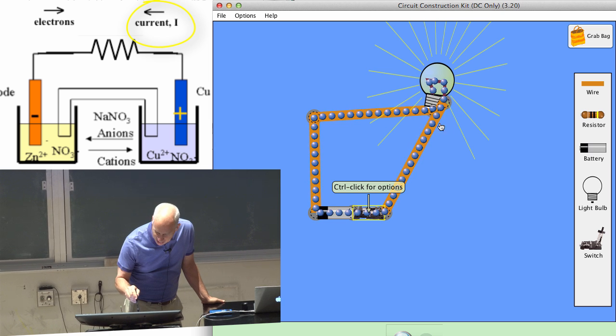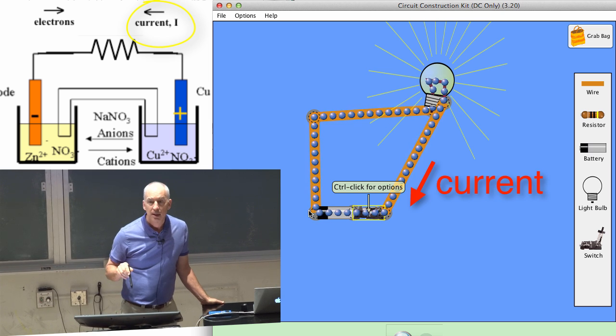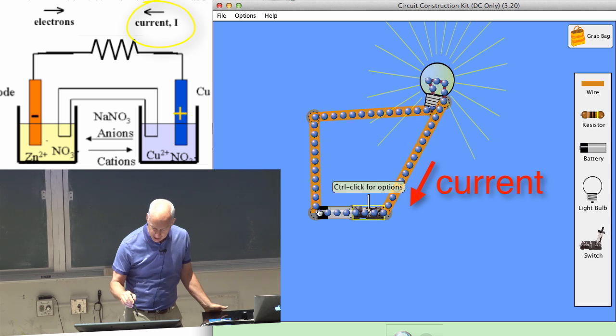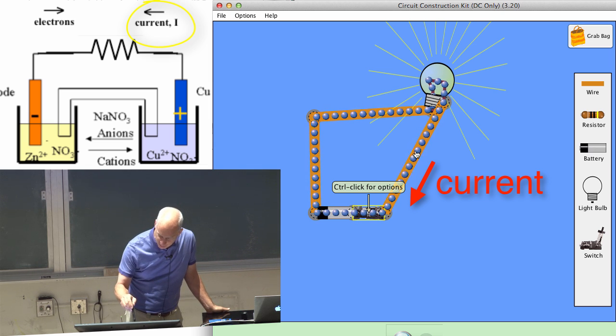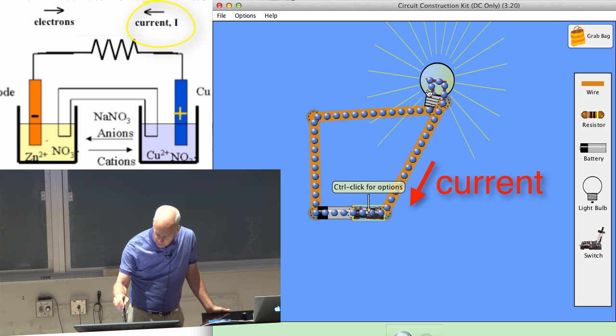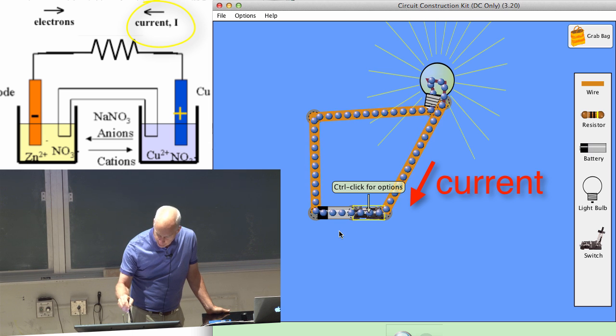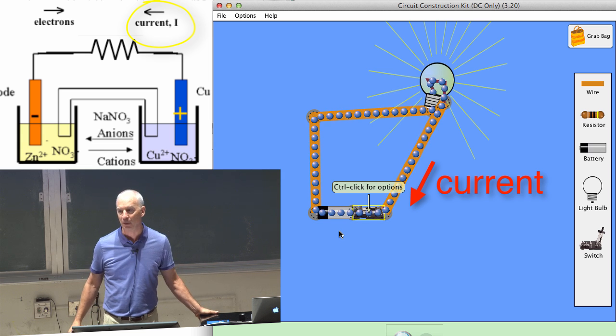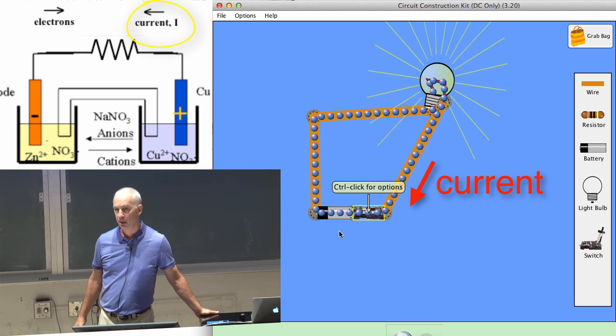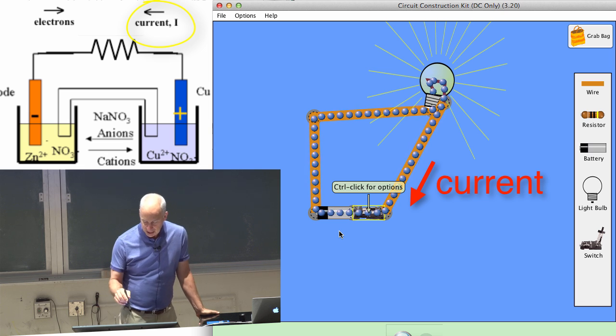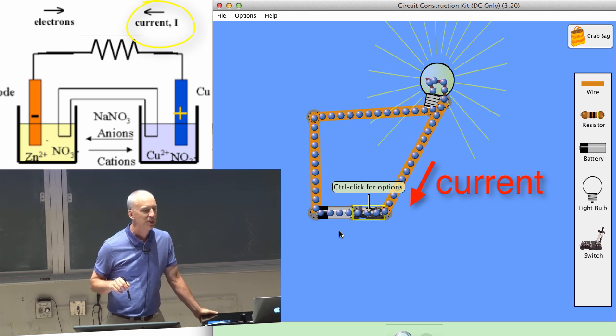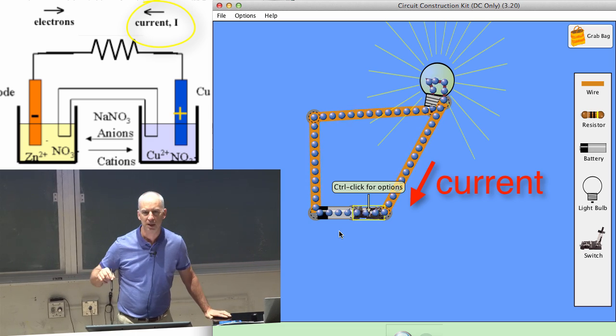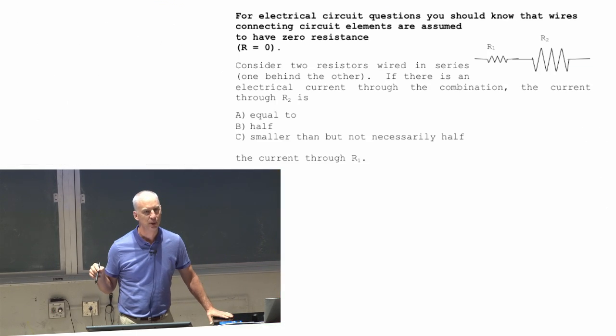And so the current here is actually going clockwise, opposite to the direction that the electrons are going. Current is flowing from the positive side of the battery through the light bulb around and into the negative side of the battery. That's our definition of the direction of the current. Even though the things that are carrying charge are going the opposite way, they're negatively charged. And so our definition of the current is fine for the way positive charge would move.